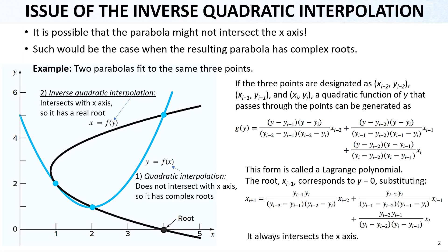The inverse quadratic interpolation method is better than the secant method because it uses a second-order degree polynomial. However, there is a big issue: it is possible that the parabola might not intersect the x-axis. This would be the case when the resulting parabola has complex roots. For example, you can see a blue curve which passes through three points but doesn't intersect the x-axis. We need the intersection with the x-axis to find a real root. This means the function has only complex roots.